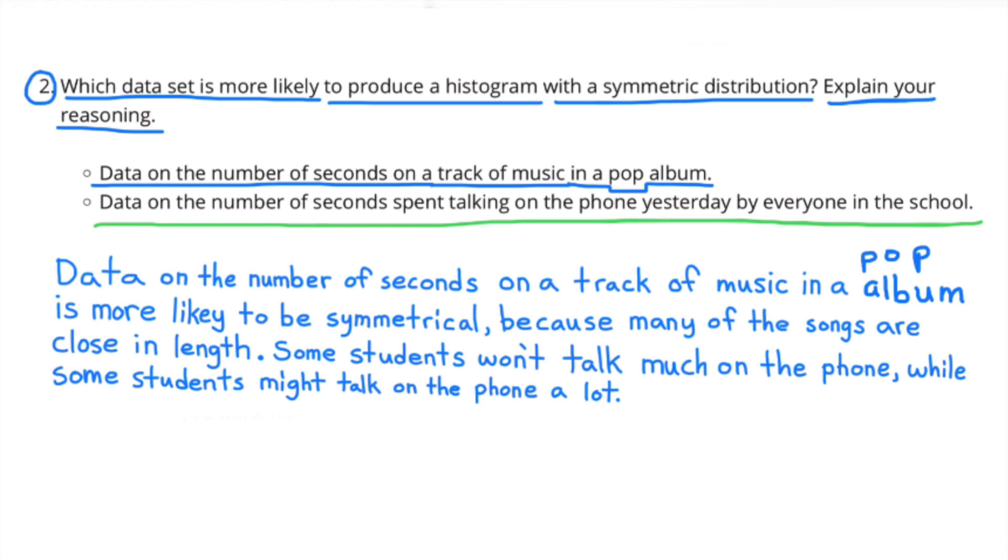Data on the number of seconds on a track of music in a pop album is more likely to be symmetrical, because many of the songs are close in length. Some students won't talk much on their phone, while other students might talk on the phone a lot.